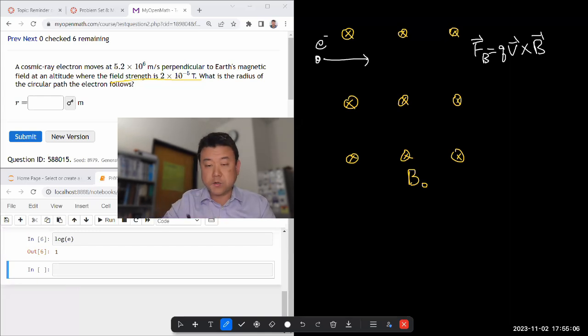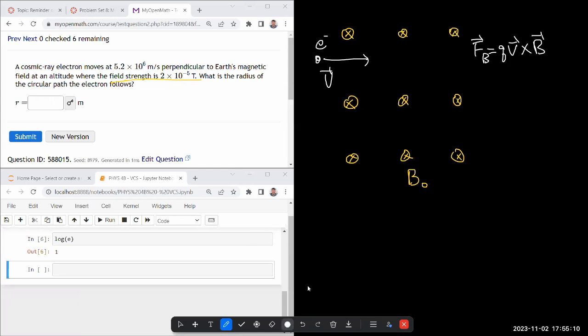Let me sketch V cross B as upward. This is my V. My V cross B is pointed upward. And now what you have to remember is that the charge being negative means the direction of the force is the opposite to the V cross B.